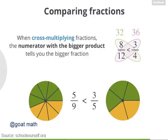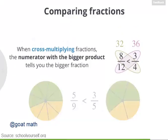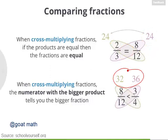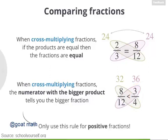To recap: when you cross multiply fractions, if the products are equal then the fractions are equal. And if the products are different, the numerator with the bigger product tells you which is the bigger fraction. A final word of caution: this rule applies to positive fractions. If you're ever comparing fractions with negative numerators or denominators, this rule might not always work — so be very careful.